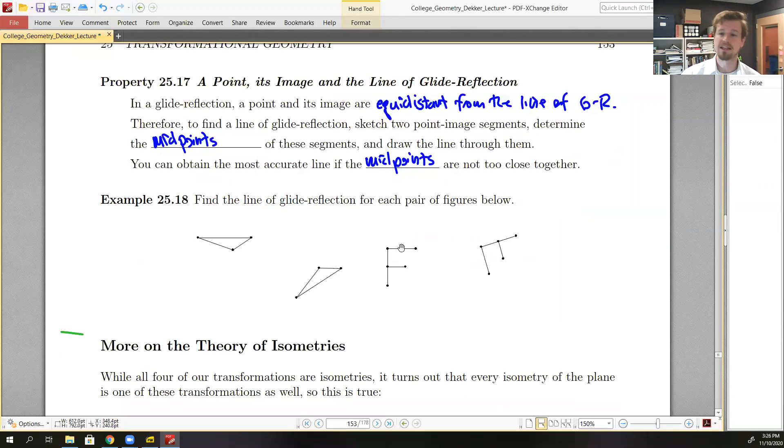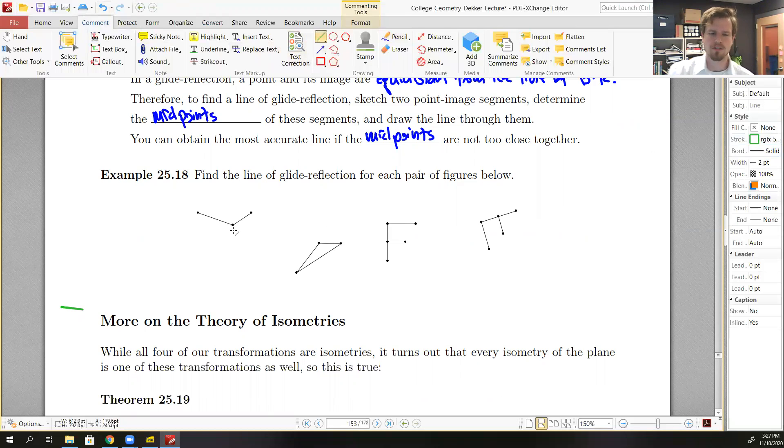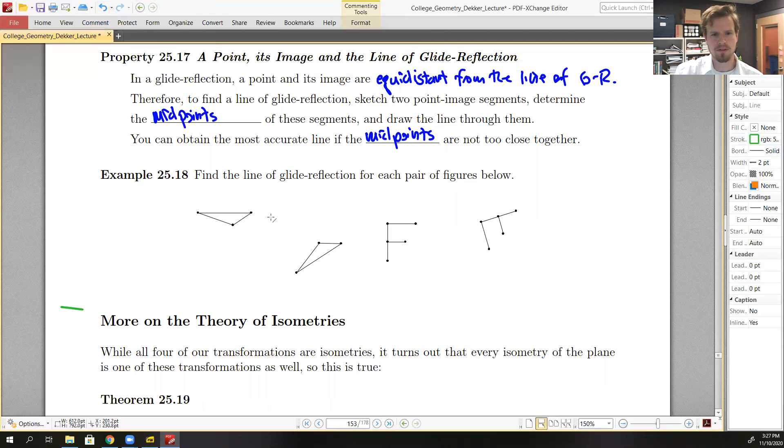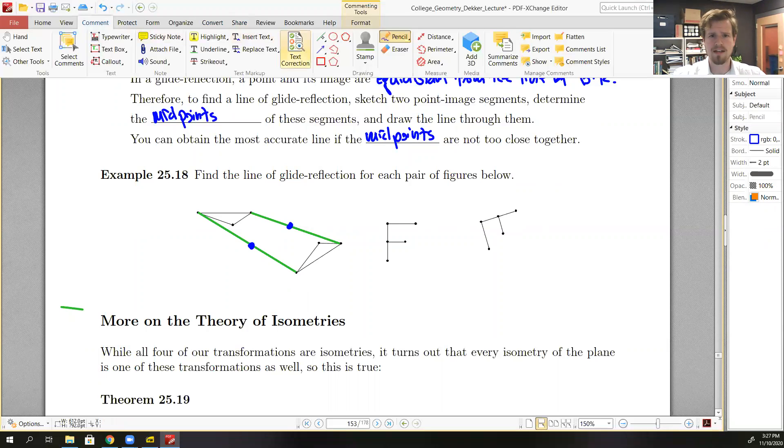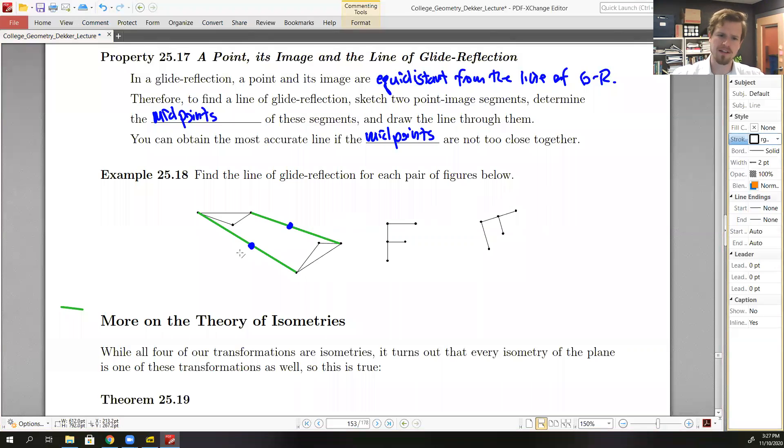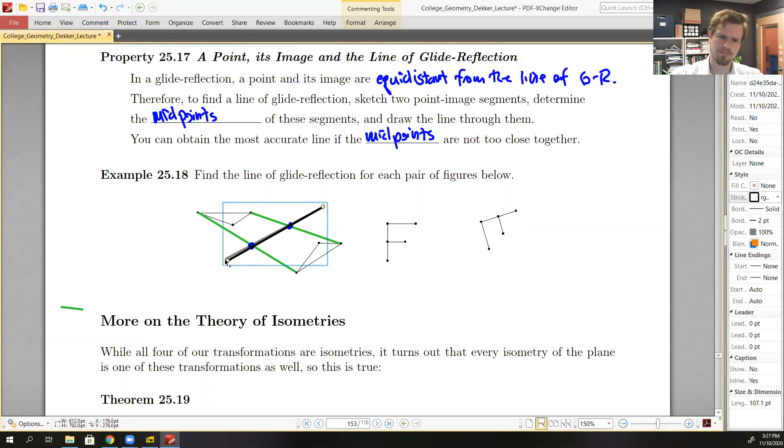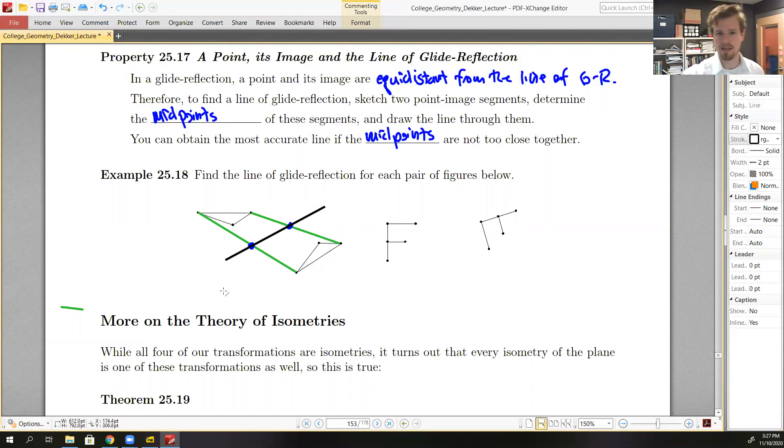So let's go ahead and find the line of glide reflection. Again, this doesn't tell us the vector. It doesn't tell us the magnitude by which we're translating. It only gives us the direction. So let's create our point-image segments. So let's go with this one and this one. And then if we go ahead and find the midpoints, somewhere around there. And that's about right. Again, that should be exact in your homework. We can find the line then that passes through them both. And we have our line of glide reflection.